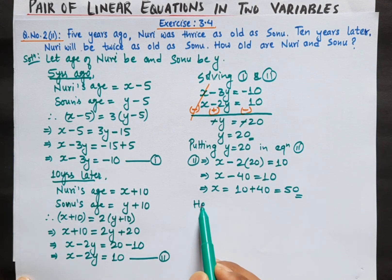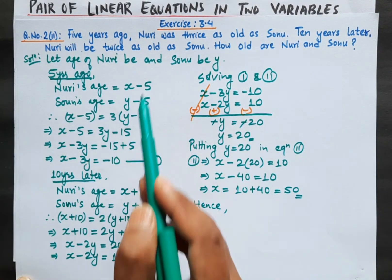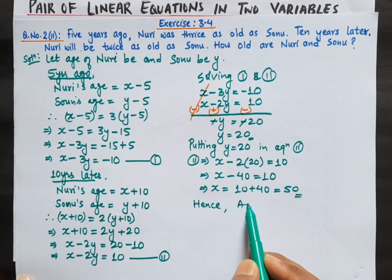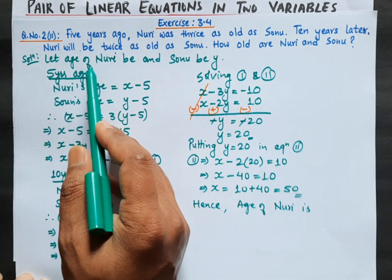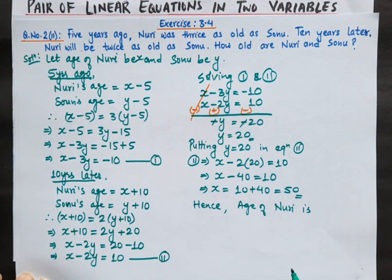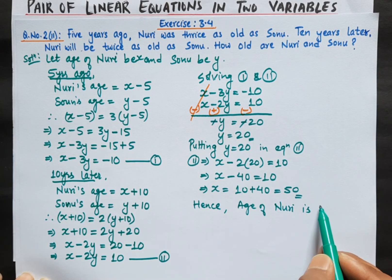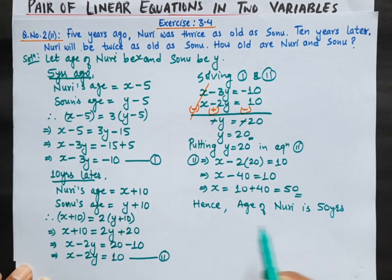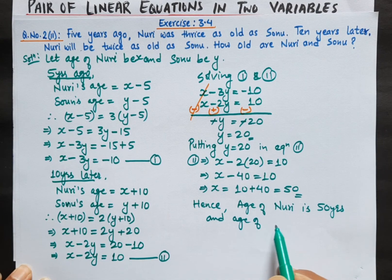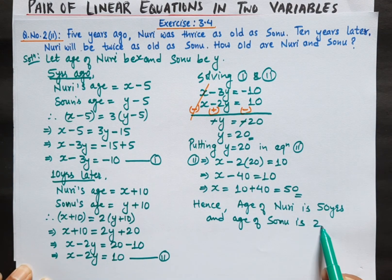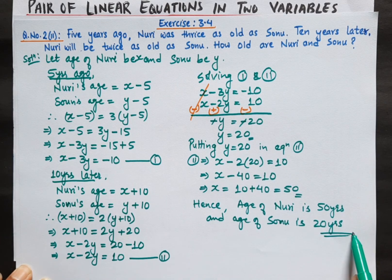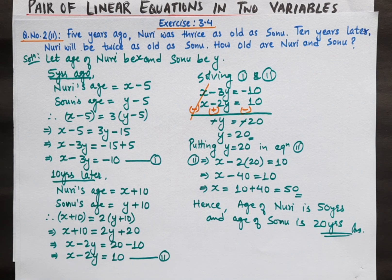This is a word problem so we write the final answer in sentence form. Hence, the age of Nuri is x, which is 50 years. And the age of Sonu is y, which is 20 years. This is the solution to question number 2. Remaining questions will be done in our next class. Till then, keep practicing — thank you very much!